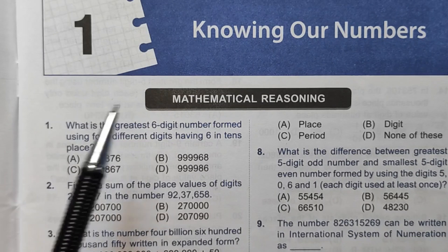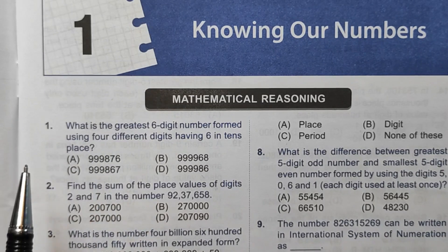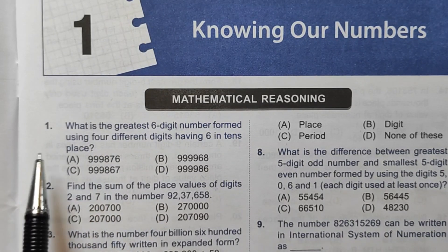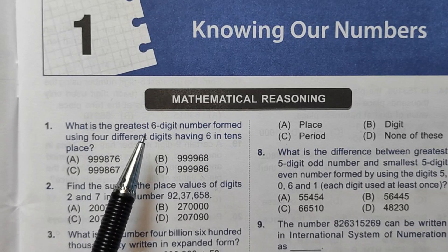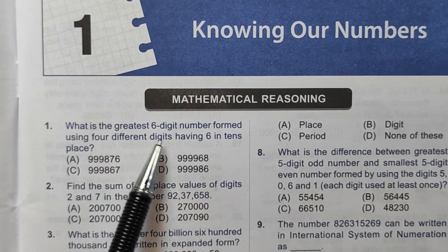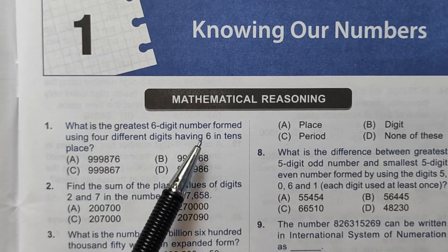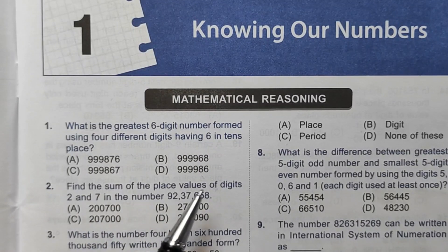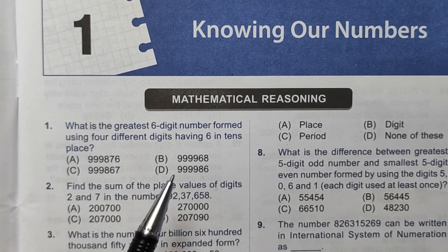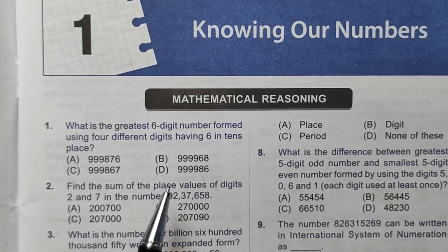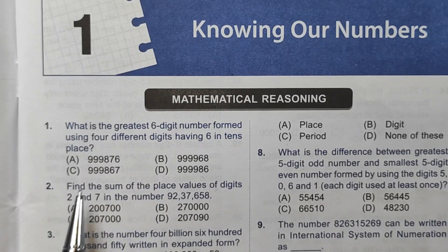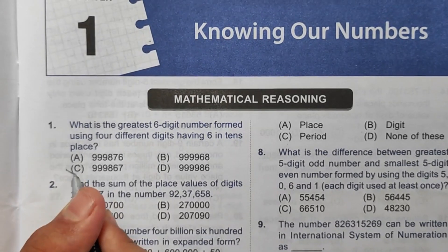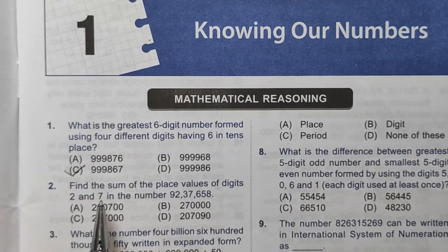First chapter, Knowing Our Numbers, Mathematical Reasoning. First question: What is the greatest 6-digit number formed using 4 different digits having 6 in the 10th place? In option C and option B, 6 is in the 10th place and they have 4 different digits. The answer in option C is 999867. So the correct answer will be option number C.